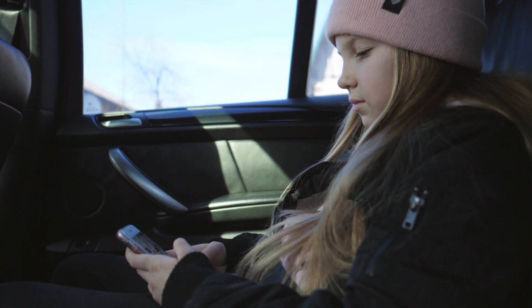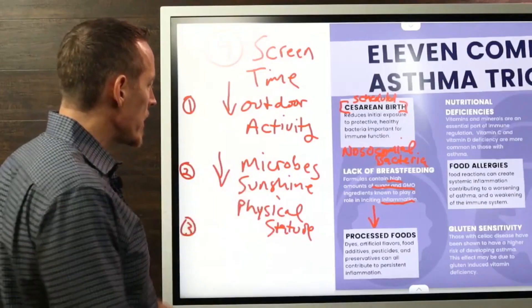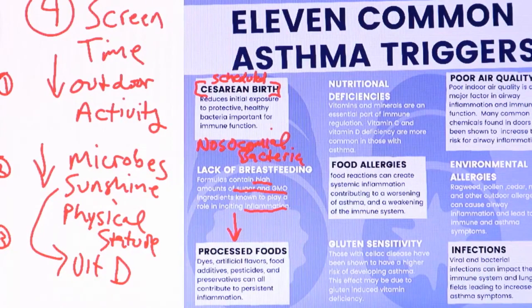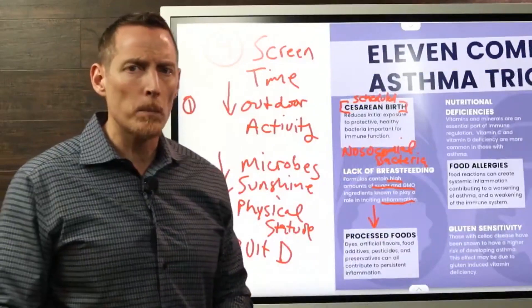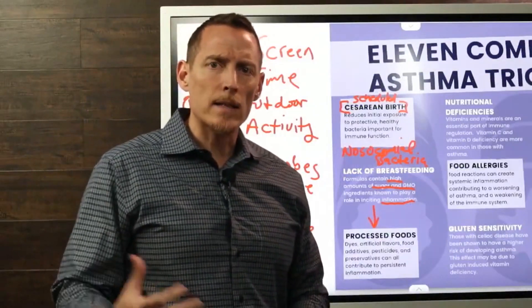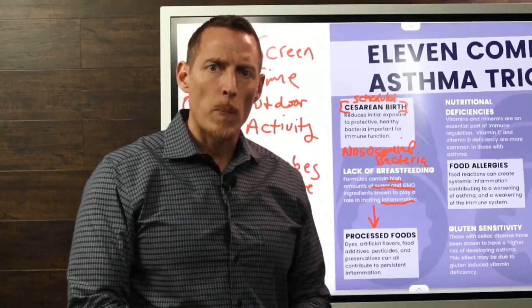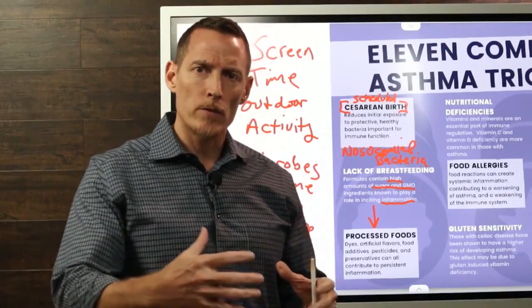When we take away sunshine, vitamin D deficiency becomes one of the triggers for asthma. Nutritional deficiencies are right there as a factor. So vitamin D deficiency from lack of sunshine, and then reduction in exposure to microbes over time — why is that important? Because bacteria are important.